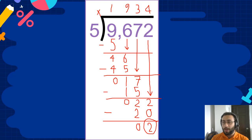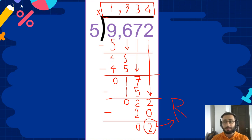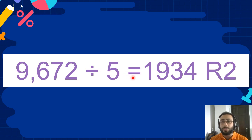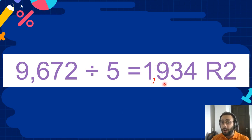So this 2 is our remainder. And you can make it beautiful. 1,934 is our quotient. So we put it together: 9,672 divided by 5 equals 1,934 with remainder of 2.